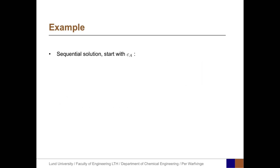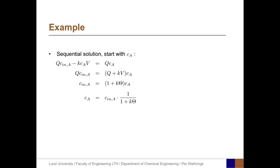For the sequential solution, starting with A: Q × C_in,A − K × C_A × V = Q × C_A. Moving C_A terms to one side and substituting V/Q = θ gives C_in,A = (1 + K × θ) × C_A, so C_A = C_in,A × 1/(1 + K × θ). With numerical values: C_A = 2 × 1/(1 + 0.5 × (5/1.25)) = 2 × 1/(1 + 2) = 0.667 mol/m³.